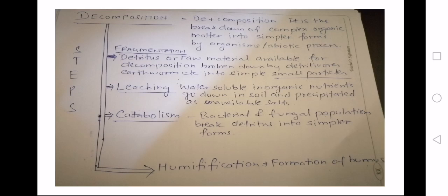As you see, it is the breakdown of complex organic matter into simpler forms by organisms or abiotic processes. Now the steps of decomposition I have written here. First is the fragmentation part, where the detritus or the raw materials, organic raw materials, are available for decomposition or broken down by the detritivores.